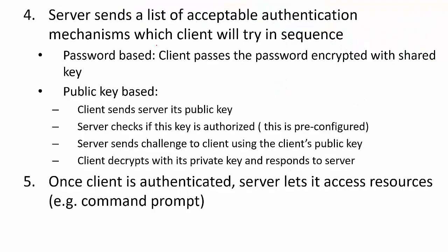Then starts authentication, where the server sends a list of acceptable authentication mechanisms which the client will try in sequence. One can be password-based, where the client passes the password encrypted with the shared key derived using the Diffie-Hellman key exchange. SSH also supports public-key-based authentication: the client sends the server its public key, the server checks if this key is authorized (pre-configured into the server), and then the server sends a challenge to the client using the client's public key. The client decrypts it with the private key and responds — a challenge-response much like we have seen in cryptographic protocols. Once authenticated, the server lets the client access its resources, for example giving a command prompt.